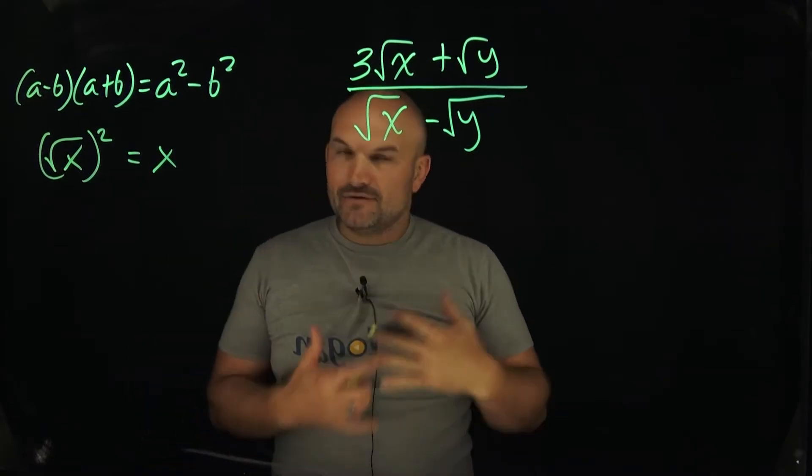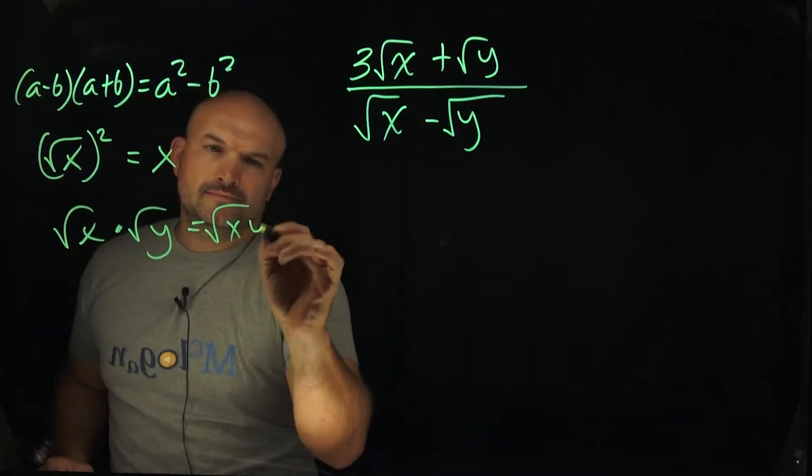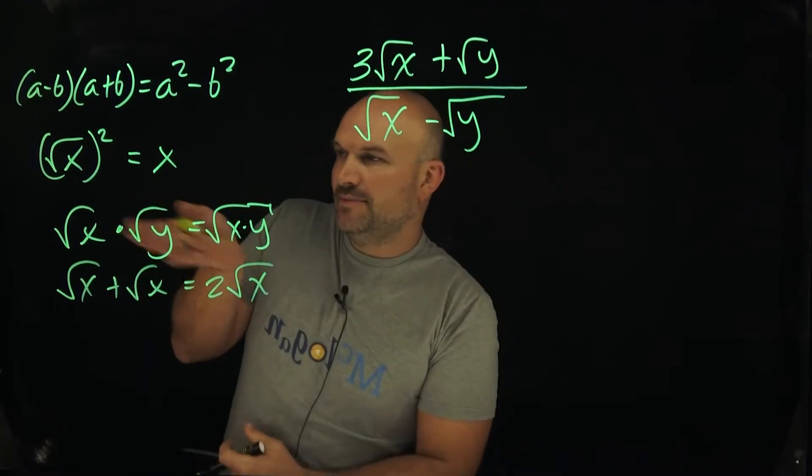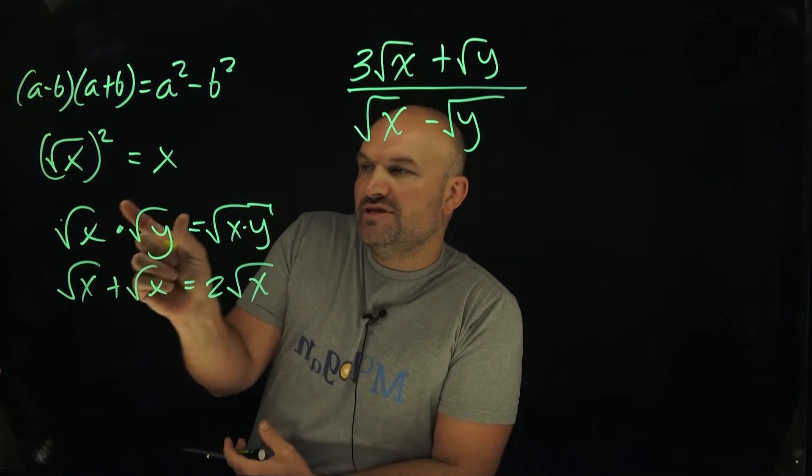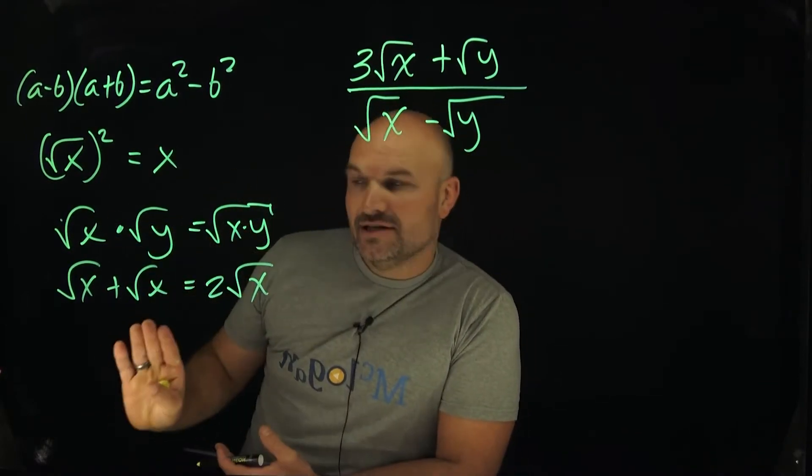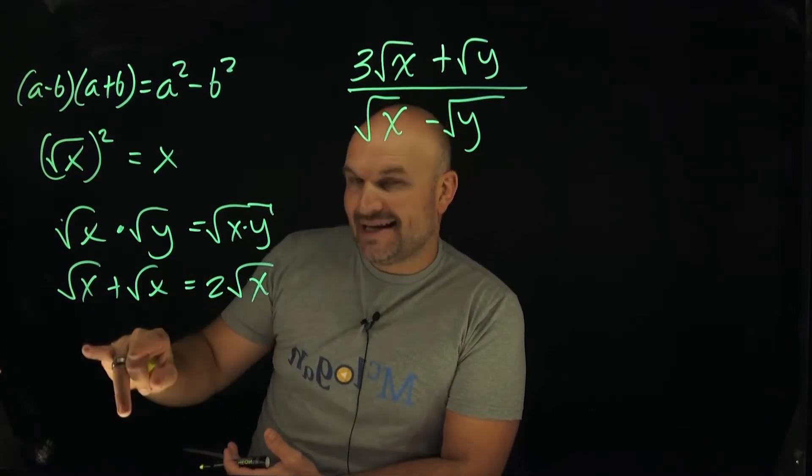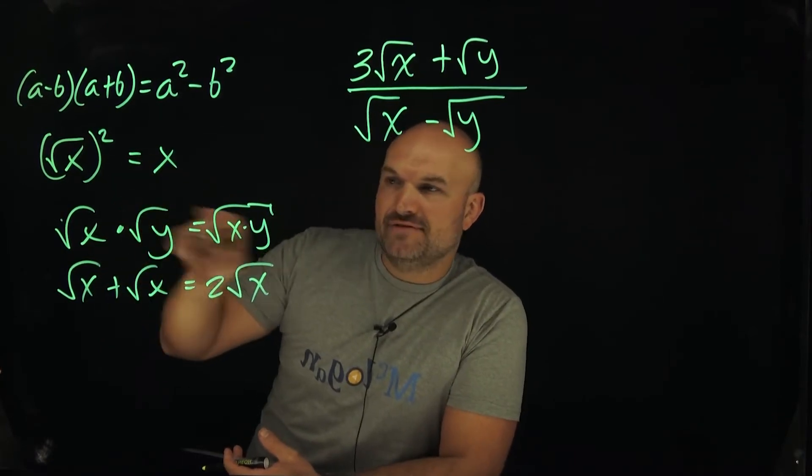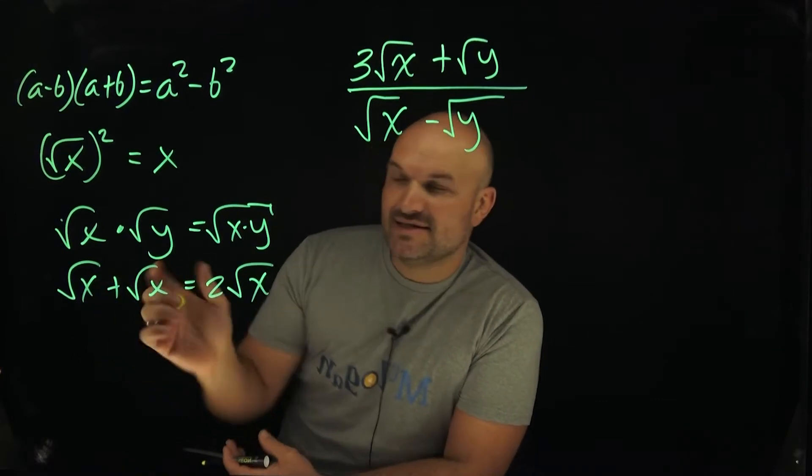Now, the next thing we want to do is remember a couple operations with radicals. The first one is the product property. When I have the square root of x times the square root of y, as long as the index is the same, you just multiply the two radicands together and keep it under the square root. And when we're adding two square roots, this is really important. You have to not only have exactly the same radicand, but also the same index. For multiplication, it doesn't matter if the radicands are different, you just multiply them. However, for addition, they have to be the same index as well as the same radicand.